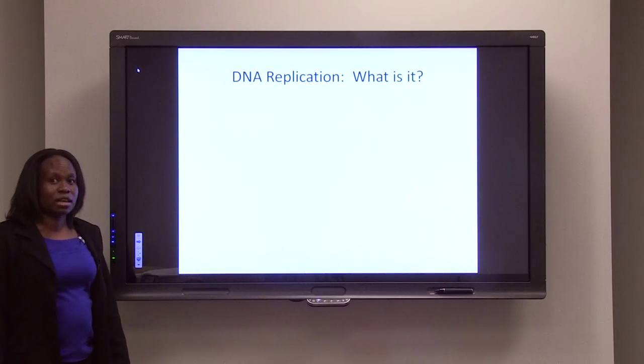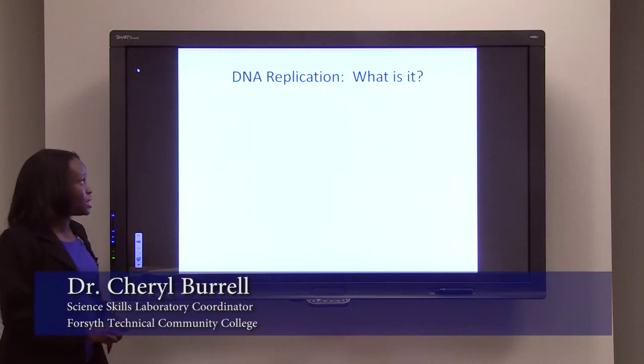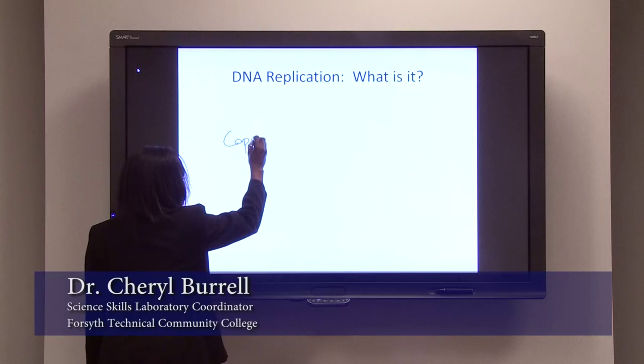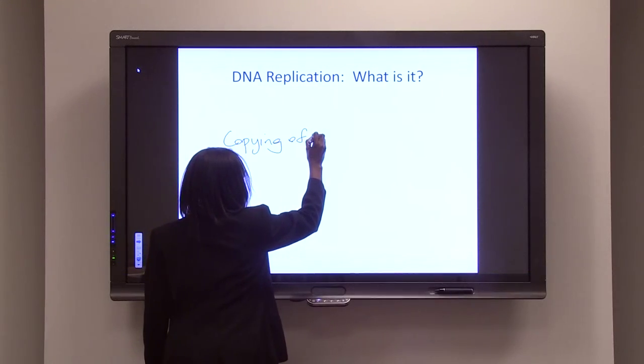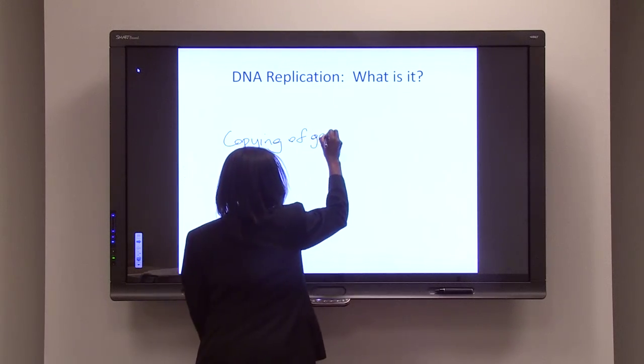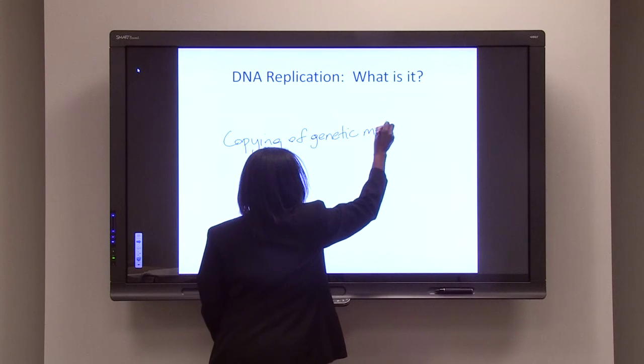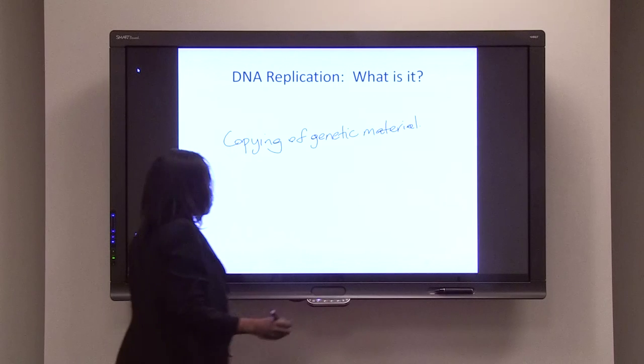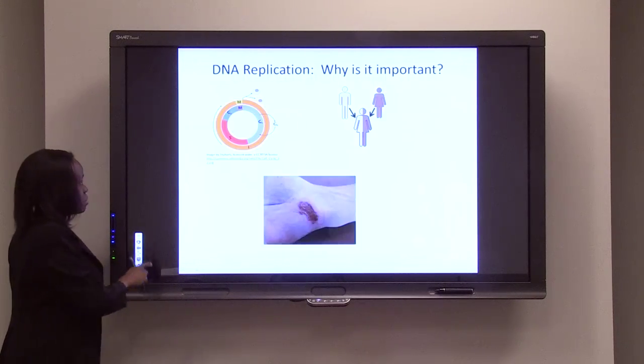So now we're going to be talking about DNA replication. So what is it? Basically, DNA replication is copying our genetic material. So if we start off with one molecule of DNA, as a result of replication, we end up with two. That's basically what DNA replication is about.